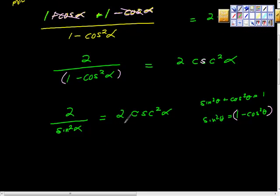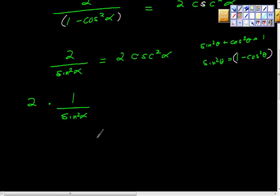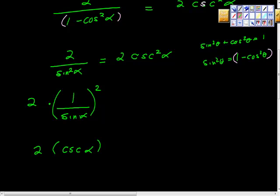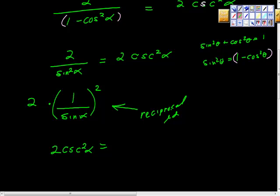I'm going to rewrite two over sine squared alpha as two times one over sine squared alpha. We can pull the square out, so one over sine alpha is cosecant alpha — that's one of our reciprocal identities. So we get two cosecant squared alpha, which matches the right-hand side exactly. We've proven the identity! The only way to get really good at this is to keep doing it.